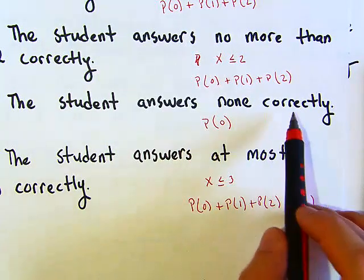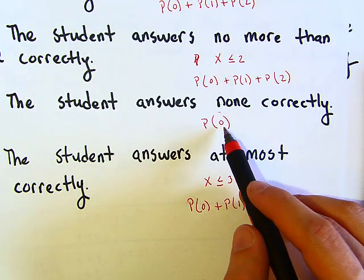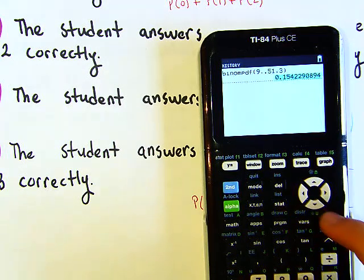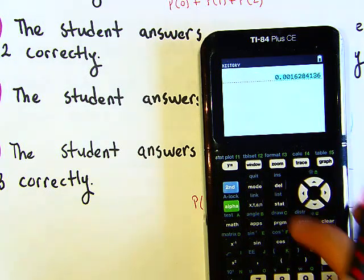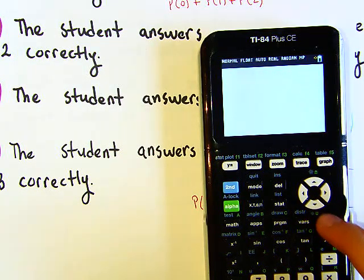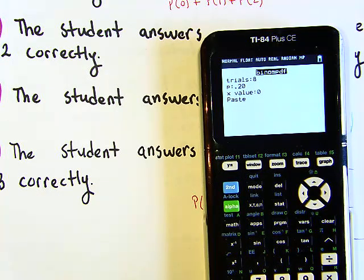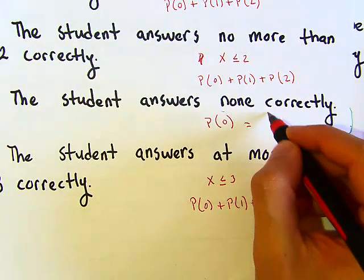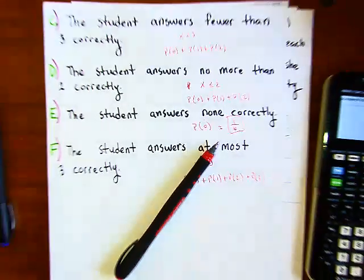For Part E, the probability of getting none correctly: using 2nd → VARS → binomial PDF with n equal to 8, p equal to 0.20, and x equal to 0, the result is about 16.7%. So there's roughly a one-in-six chance of guessing all eight questions wrong. I hope this helped — we'll move on to question six in the next video.